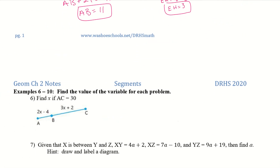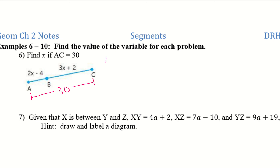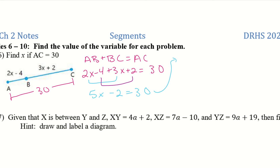Next page — we want to find the variable for each problem, 6 through 10. For number 6, find X if AC equals 30. We take AB plus BC equal to AC: 2X minus 4 plus 3X plus 2 equals 30. Combining like terms gives 5X minus 2 equals 30. Adding 2 to both sides: 5X equals 32, so X equals 32 over 5.